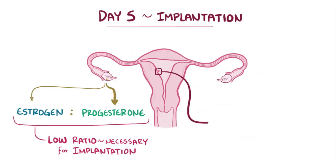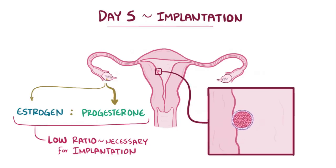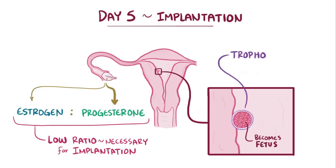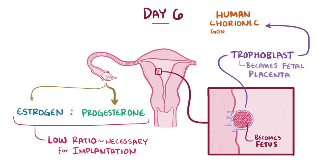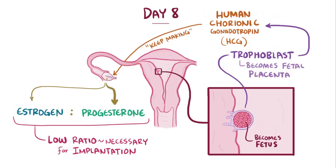At this early stage, there are two parts to the blastocyst: an inner set of cells that go on to become the fetus, and an outer set of cells called the trophoblast that burrow into the endometrium on day six and eventually develop into the fetal part of the placenta. Those trophoblast cells start to produce a hormone called human chorionic gonadotropin, or HCG, around day eight. This is important because HCG lets the corpus luteum know that there has been a successful implantation into the endometrium, and that it should continue to make estrogen and progesterone.